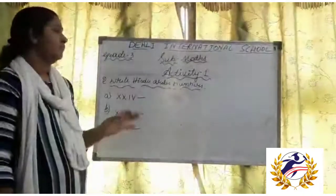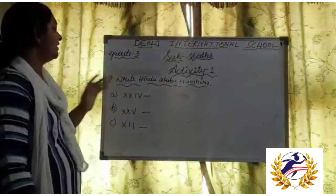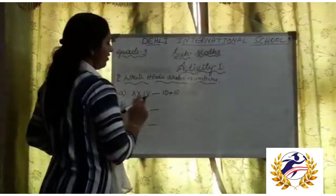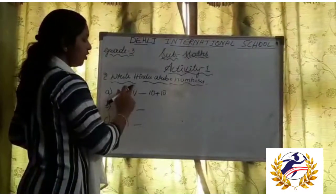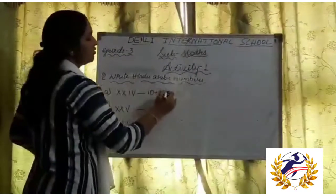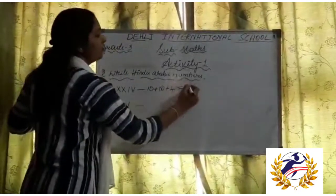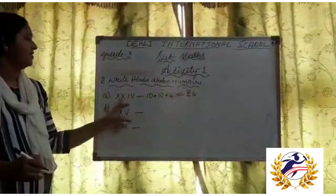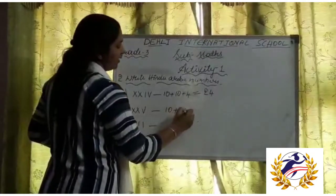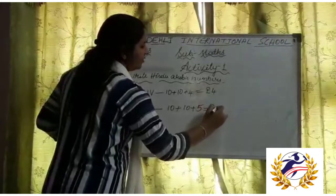Let us move to the next activity: write the Hindu-Arabic numbers for the given Roman numerals. For XXIV — X is 10, another X is 10, then I before V means 5 minus 1 equals 4. So 10 plus 10 plus 4 equals 24. For XXV — X is 10, another X is 10, and V is 5. So 10 plus 10 plus 5 equals 25. For XII — X is 10, I is 1, and another I is 1. So 10 plus 1 plus 1 equals 12.